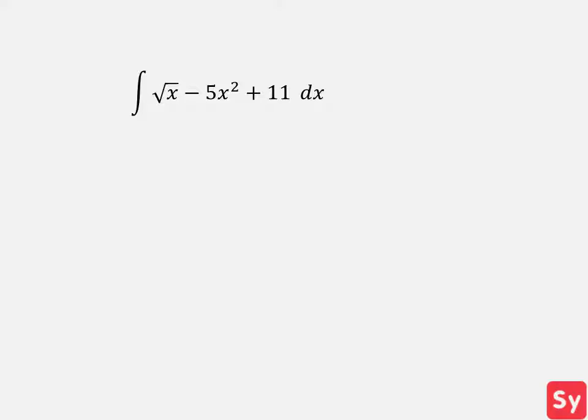we have the integral of the square root of x minus 5x squared plus 11 with respect to x. We'll use the sum rule to solve this and split the integral into three integrals.